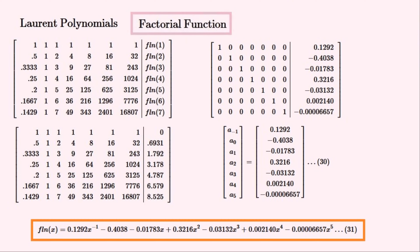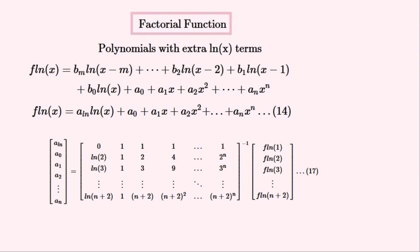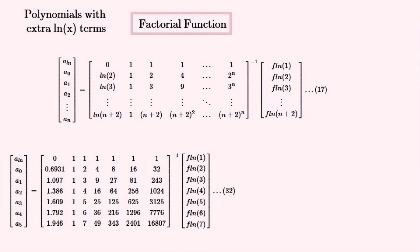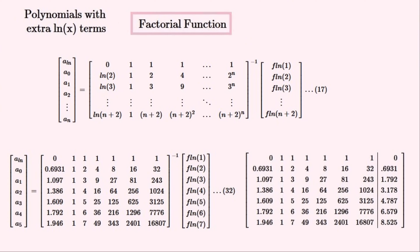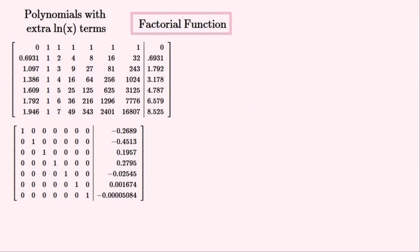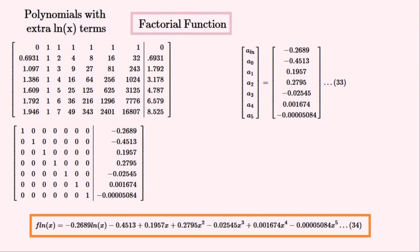Now we'll try calculating the polynomial with an extra log term that approximates the factorial. We'll use just one extra log term. This is the matrix equation we'll be using. We'll substitute n equal to 5 into this matrix equation, convert it into the corresponding augmented matrix, and solve for the required variables. We'll convert this matrix to reduced row echelon form, then convert the augmented matrix back into the vector equation which is the solution. This is the equation we have found that closely approximates the factorial function.